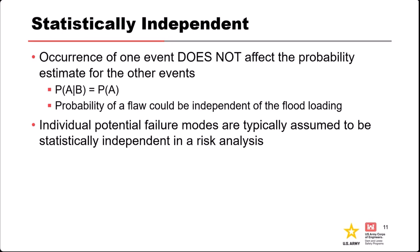Individual failure modes are usually assumed and estimated as if they were independent, which means we estimate their marginal probabilities when doing system response curves. If there is any dependence between failure modes, we deal with that later in the risk model when we combine failure modes to get a total risk estimate.